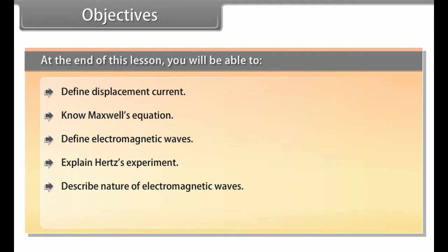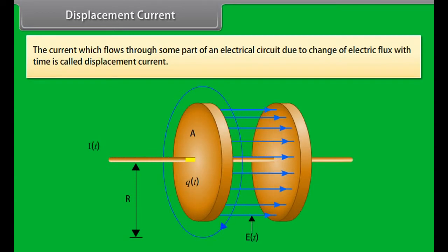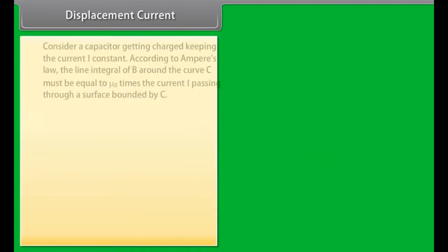Displacement current. The current which flows through some part of an electrical circuit due to change of electric flux with time is called displacement current.